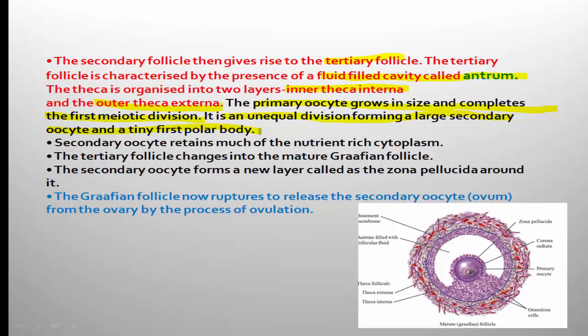The tertiary follicle then changes into the mature graafian follicle. The secondary oocyte growing inside the graafian follicle forms a new layer around itself called the zona pellucida. The graafian follicle then ruptures to release the secondary oocyte from the ovary by the process called ovulation.